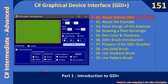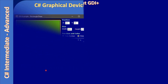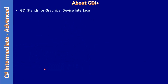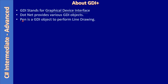Now we will learn the basics of GDI plus. GDI stands for graphical device interface. .NET provides various GDI objects — for example, pen is a GDI object and brush is also a GDI object. The pen object is useful for performing line drawing, so if you are drawing a circle, rectangle, or even a line, we call this the outline, and this outline can be drawn using the pen.